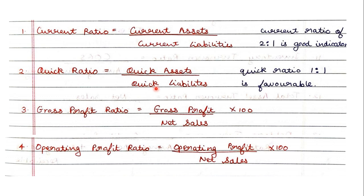The standard quick ratio is 1:1, which is favorable. The next is gross profit ratio — the formula is gross profit upon net sales into 100. Next is operating profit ratio — the formula is operating profit upon net sales into 100.